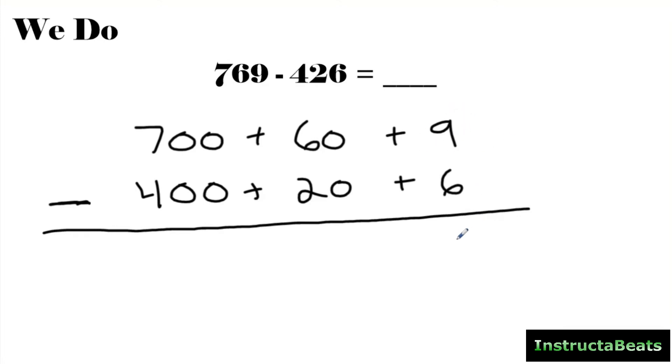So here we have 9 minus 6, which would be 3. Here we have 60 minus 20, which would be 40. You could do 0 minus 0, and then 6 minus 2 right here would give you the 4 in the 10s place. And then same thing here. 700 minus 400 is going to give me 300. And so the difference between 769 minus 426 is 300 plus 40 plus 3. So I need a 3 in my 100s place, a 4 in my 10s place, and a 3 in my 1s place. And the answer is 343.